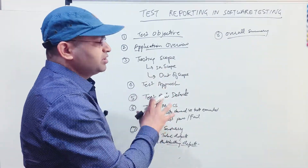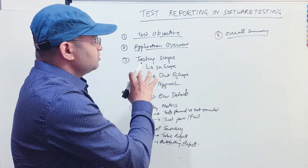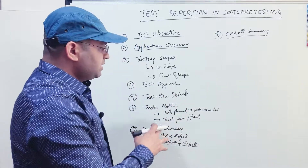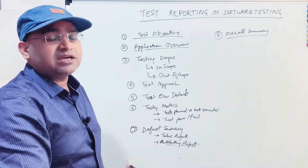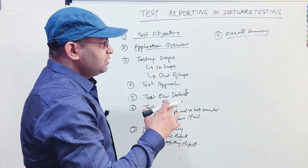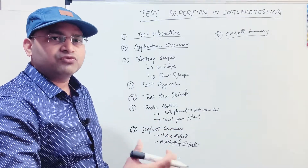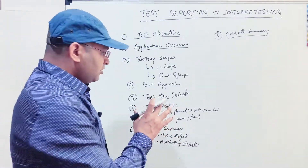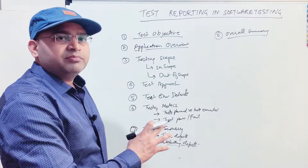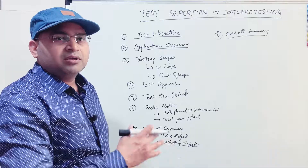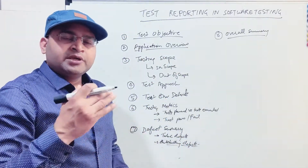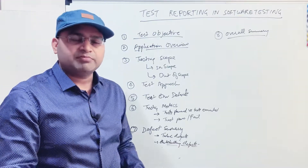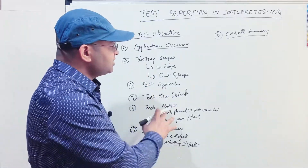The test summary report is important because when you send it to stakeholders, they can see what testing has been done, the test approach, environment details, metrics, defects, and any outstanding defects. Based on this document they can approve and move the release to production, or decide not to release if there are issues that need to be fixed. As you perform testing, you need to provide this summary to stakeholders and project members so everyone is aware of how testing is progressing.